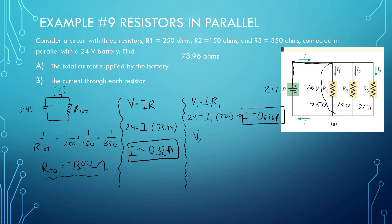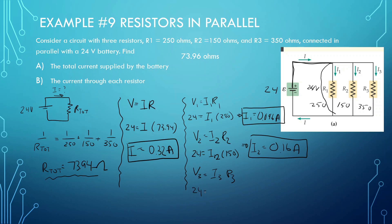V2 equals 24, I2 is what we're looking for, and R2 is 150. So I2 equals 24 divided by 150, giving 0.16 amps. For V3: 24 equals I3 times R3, where R3 equals 350. So I3 equals 24 divided by 350, giving 0.069 amps.